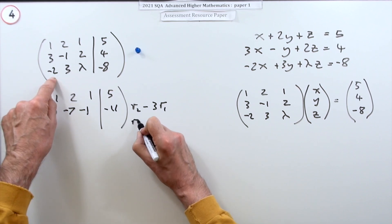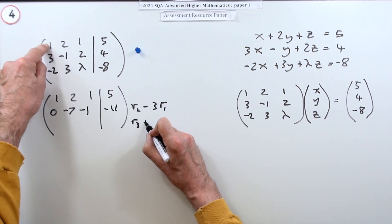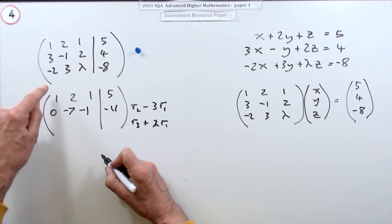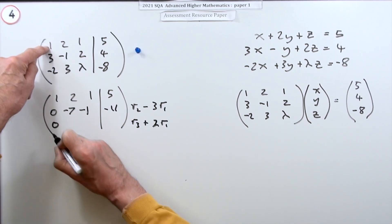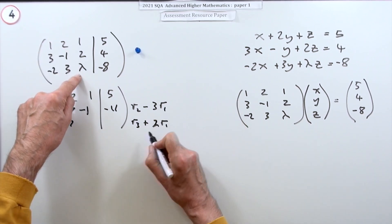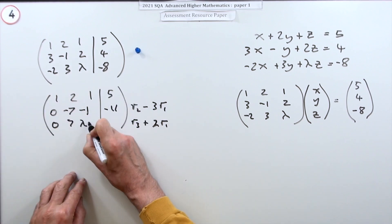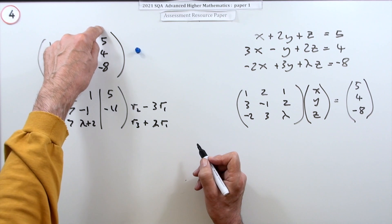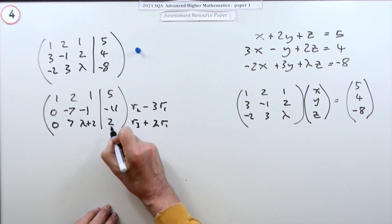And similarly here, this time I can take row three and add row one. I meant lots of row one. So negative two plus two, zero. Three plus four, seven. That's quite handy. And then lambda plus two. And then you've got negative eight plus ten. So that's two.